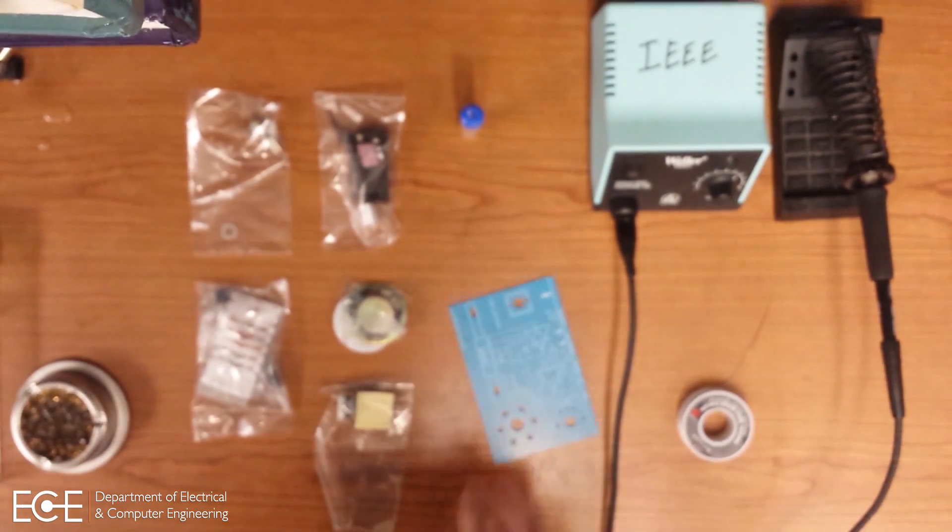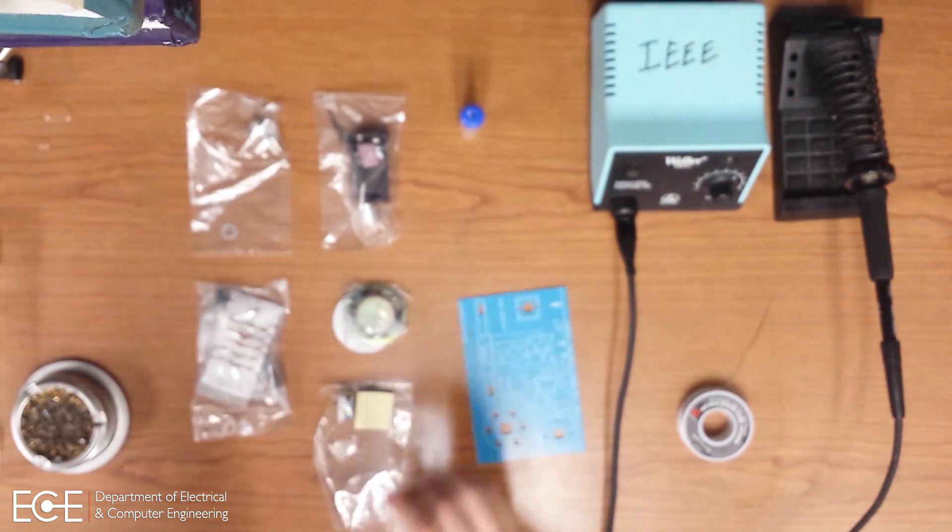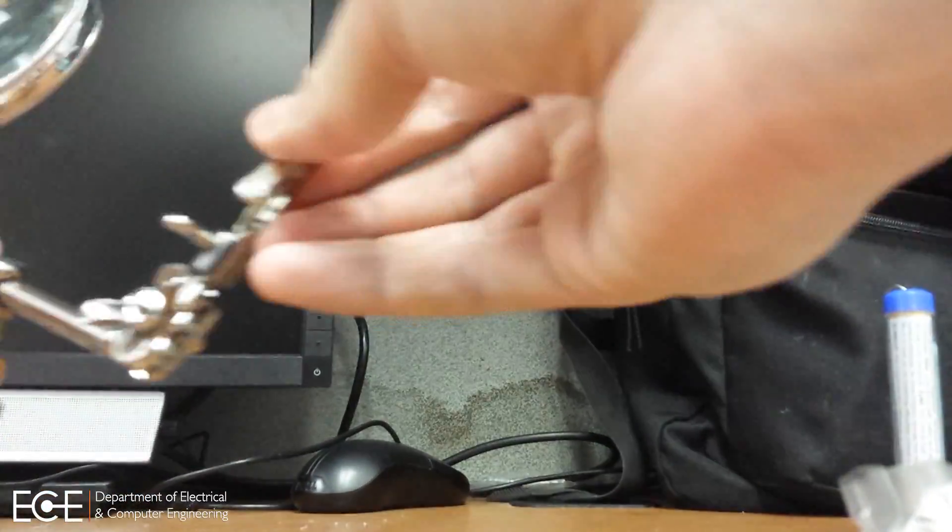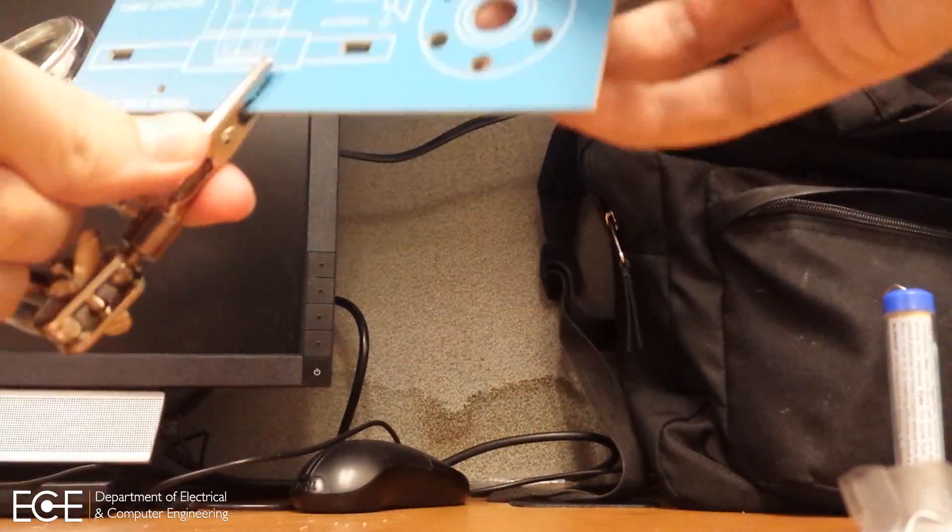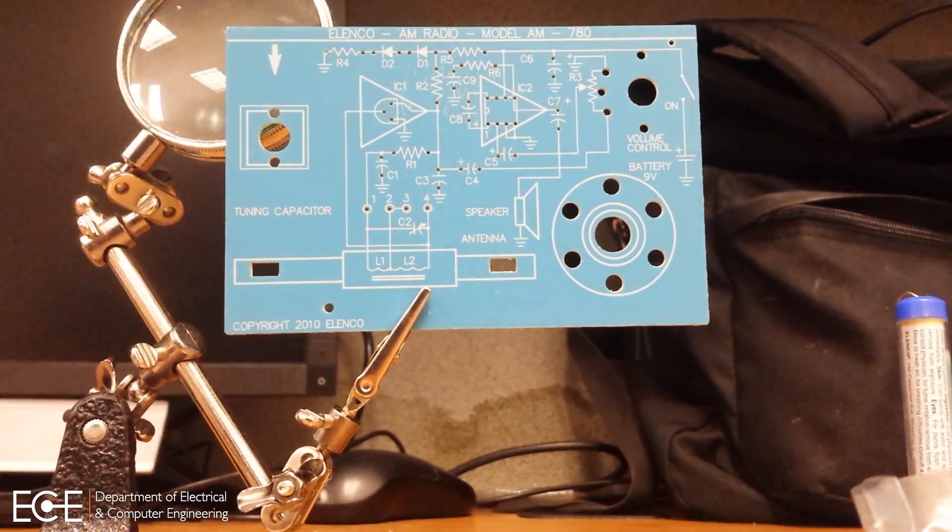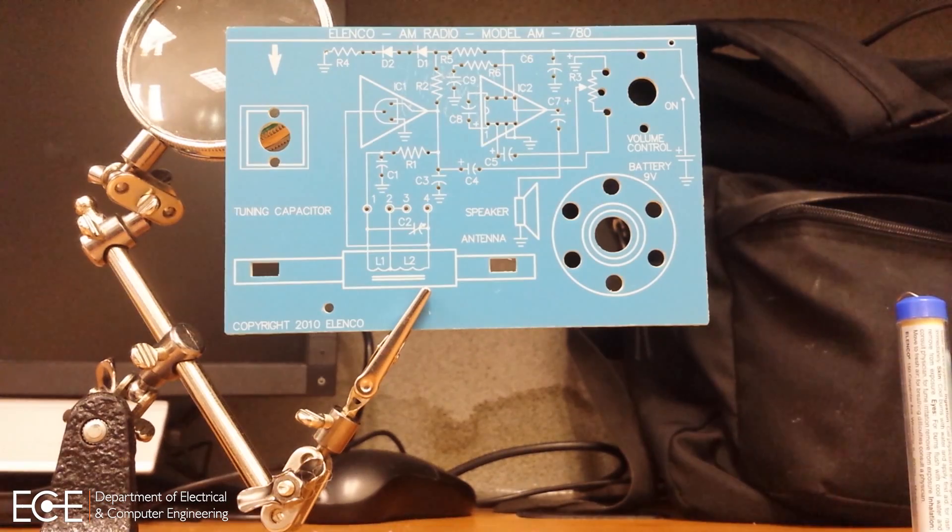As we did before, place all your components in without soldering them. Once you've placed your components in, make sure that the orientations are correct before you start soldering. Once you solder them, make sure to cut the leads. Also be sure to check for any solder bridges.